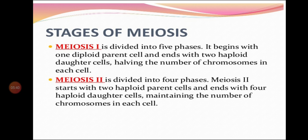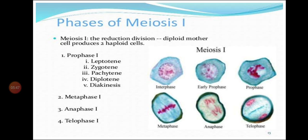Let us start with the first meiotic division, or heterotypic division. In meiosis 1, a diploid cell is divided into two haploid cells. The daughter cells differ from the parent cell in chromosome number; hence this is called heterotypic division. It consists of the phases: prophase 1, metaphase 1, anaphase 1, and telophase 1.